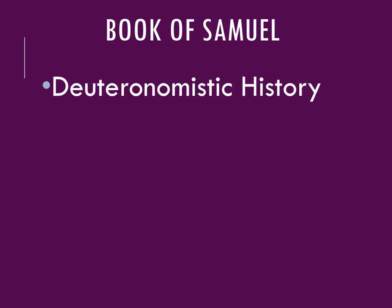To begin with, the Book of Samuel is the third book in the Deuteronomistic history. The Deuteronomistic history is the compilation of the books of Joshua, Judges, Samuel, and Kings, sometimes including Deuteronomy as an introduction or prologue. All of these books are believed to have been written by one author or one group of authors with the same purpose.